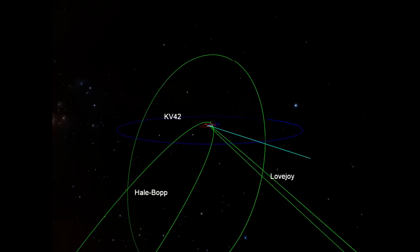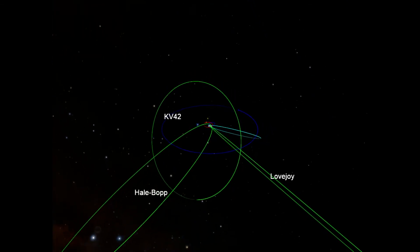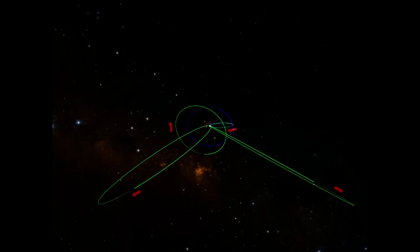Halley's orbit more closely resembles these other comets. As you can see, they are sharply inclined off the plane of the solar system. Hale-Bopp and Lovejoy are also very elliptical like Halley's Comet. You may also notice the direction of the orbit. Like Halley's Comet, these comets also display a retrograde orbit.